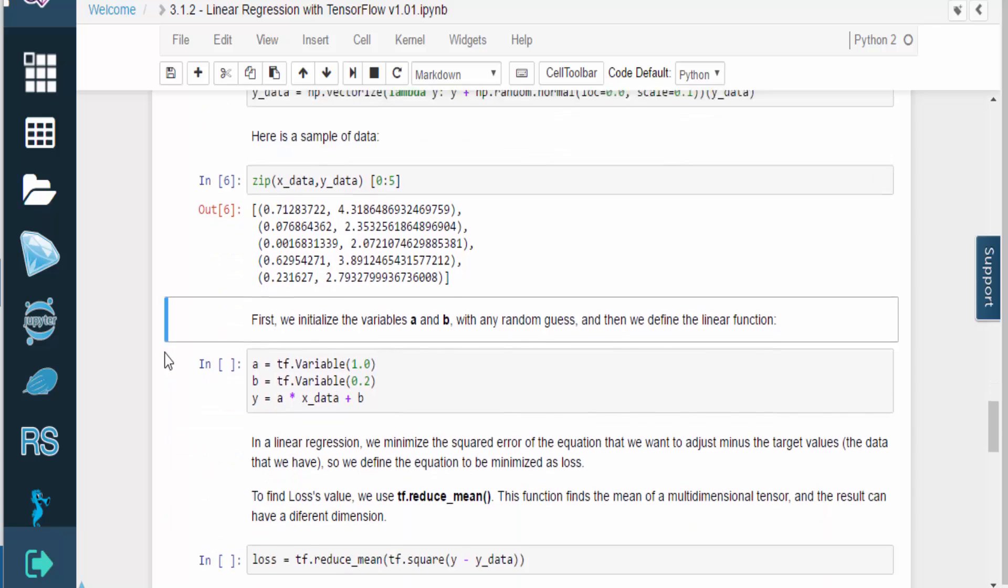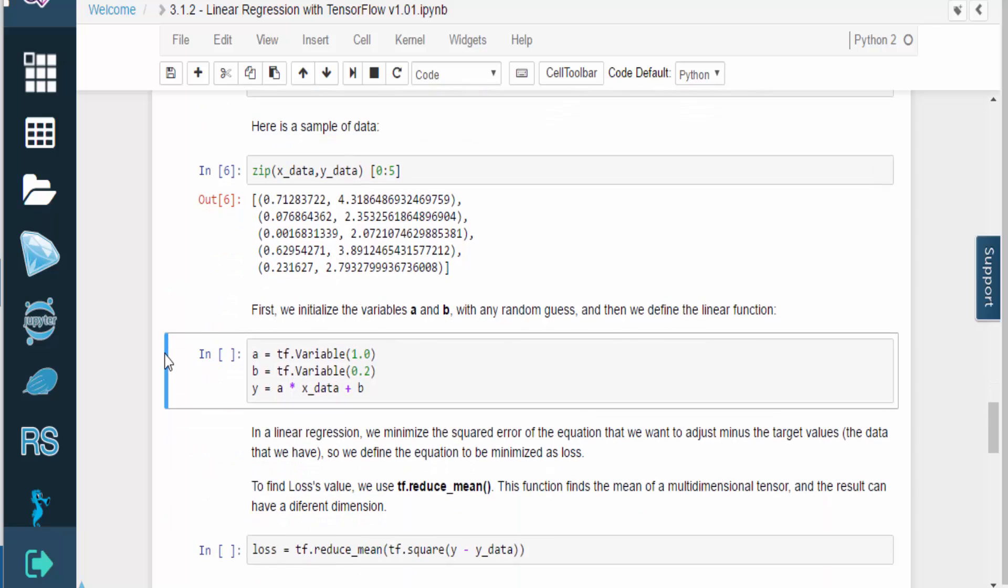To start the regression, we need to initialize our variables A and B with random values. These initial values will almost certainly result in a poor fit, but we'll adjust the parameters during training. Once we have these values, we can then define our linear function.